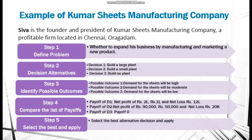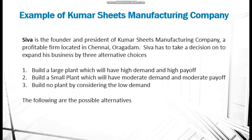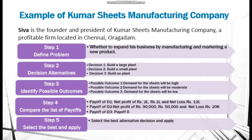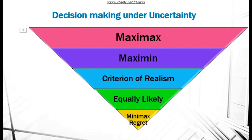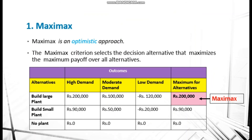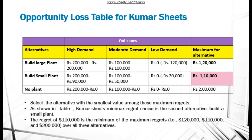Just a small recap: we dealt with decision analysis, covering the five steps of decision making — define the problem, list decision alternatives, identify possible outcomes, compare the list of payoffs, and select the best. We used the Kumar Sheets case and examined three decision-making environments. The five methods under uncertainty are: maximax, maximin, minimax regret, equally likely, and criterion of realism. Please go through the slides, comment any questions, take care of yourself, and stay safe. Thank you.